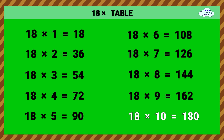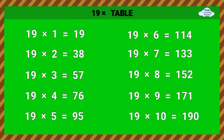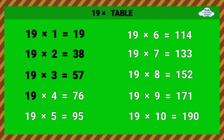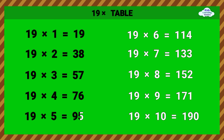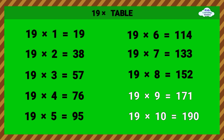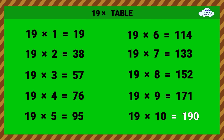18 times 9 equals 162. 18 times 10 equals 180. Nineteen times table. 19 times 1 equals 19. 19 times 8 equals 152. 19 times 9 equals 171. 19 times 10 equals 190.